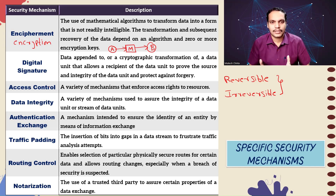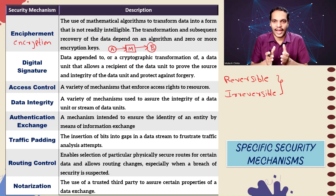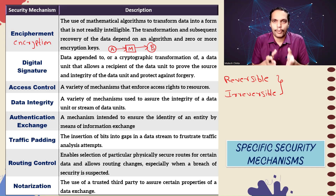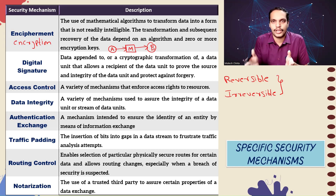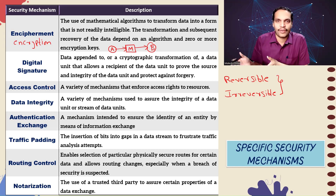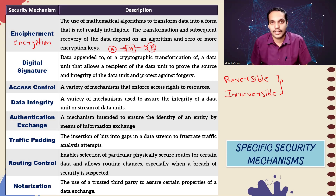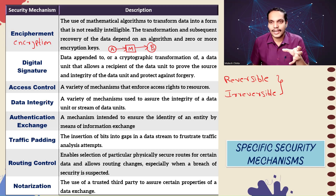The third security mechanism is access control, which we also discussed as a security service. Access control deals with a variety of mechanisms that enforce access rights to resources. Any mechanisms employed to control access to a resource by individuals can be termed as access control mechanisms. Next comes data integrity — these mechanisms might sound similar to services because they are what we implement to provide those services.